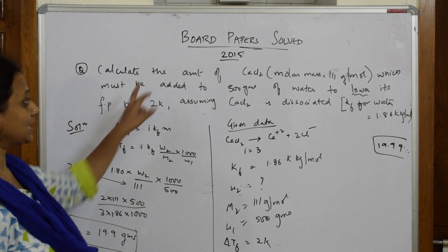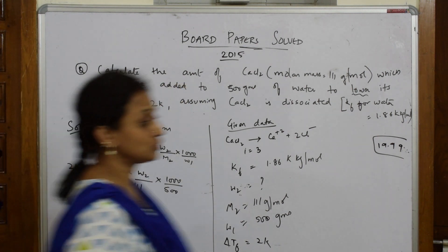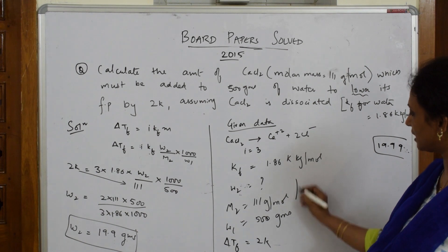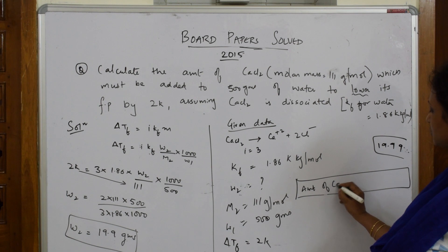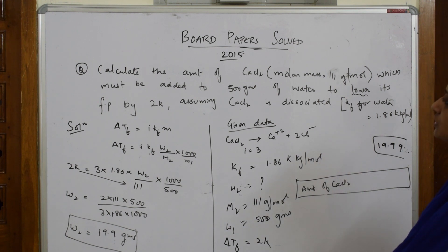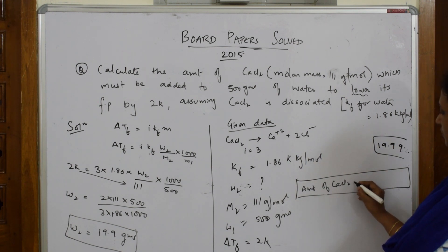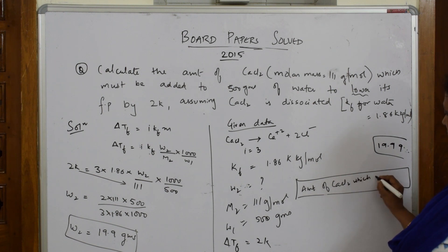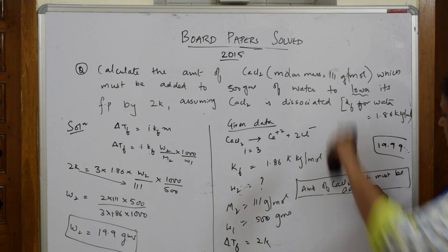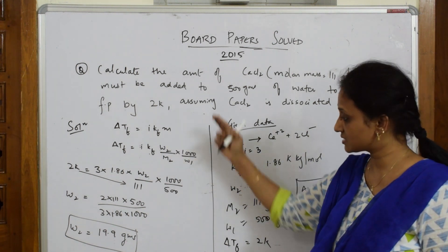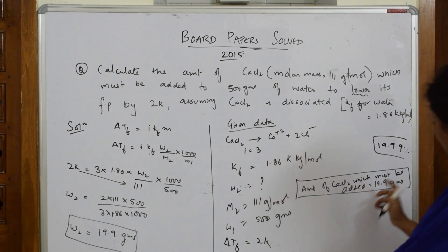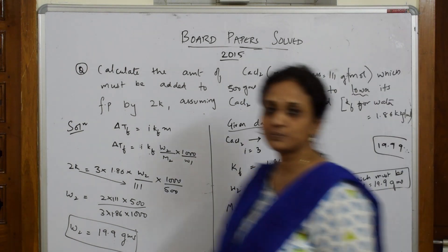Now write your final answer clearly, because this is where you get marks. Write: 'Amount of calcium chloride which must be added = 19.9 grams.' Each step — the formula, given data, substitution, and final answer with units — carries marks. Please note every step of the numerical.